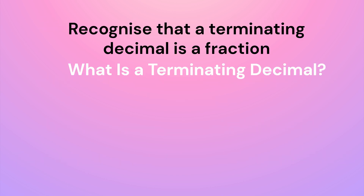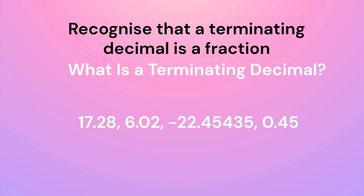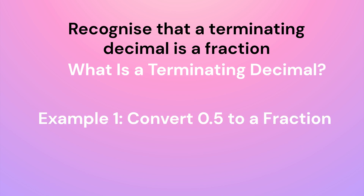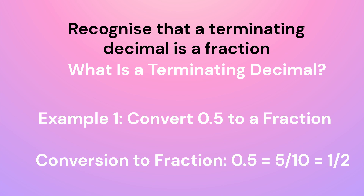A terminating decimal is a decimal where the digits after the decimal point come to an end — meaning the digits after the decimal are finite in number. In other words, it is a decimal that has a final digit. Examples are 17.28, 6.02, −22.45, 435, and 0.45. Every terminating decimal can be written as a fraction with a denominator that is a power of 10. For example, 0.5 is a terminating decimal because it has only one digit after the decimal point. It can be written as 5/10, which simplifies to 1/2.